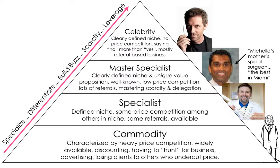The way you move up this pyramid is a series of differentiation steps. Step one, from commodity to specialist, is to specialize in a niche. Step two, to move from specialist to master specialist, is to differentiate yourself from the other specialists. From master specialist up, you need to build buzz and create scarcity around you so that there's desire and demand. And finally, at the celebrity-in-your-niche level is where you leverage into more offerings and making more money.